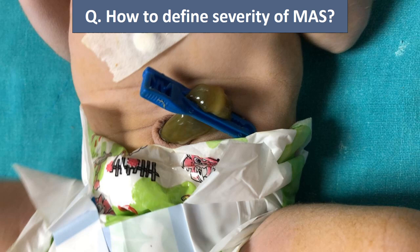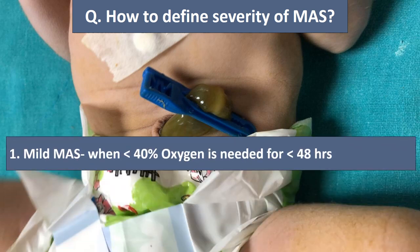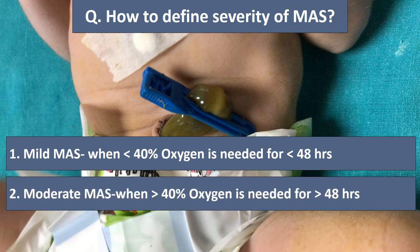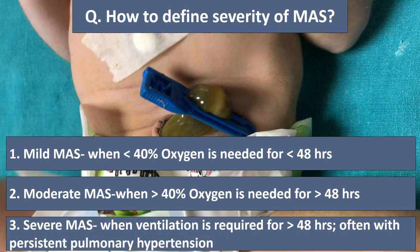How do we define the severity of meconium aspiration syndrome? We label it as mild when the newborn requires less than 40 percent oxygen for less than 48 hours. Moderate when more than 40 percent oxygen is needed for more than 48 hours. Severe when ventilation is required for more than 48 hours, and it is often associated with persistent pulmonary hypertension.